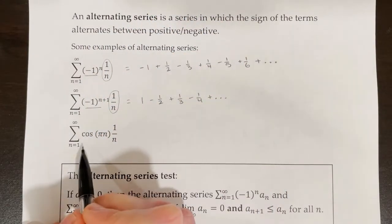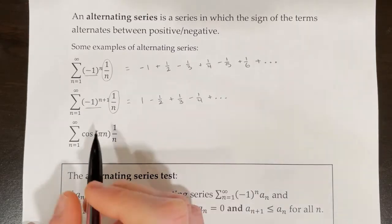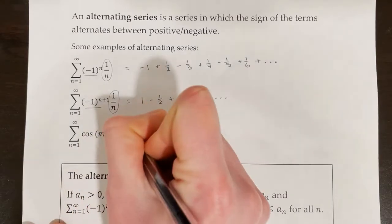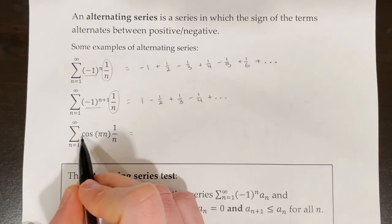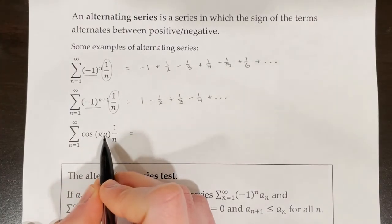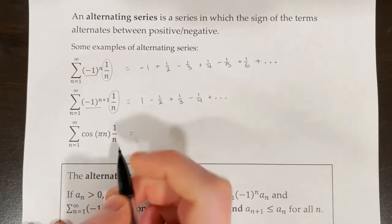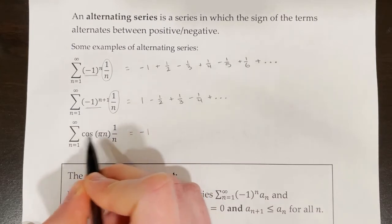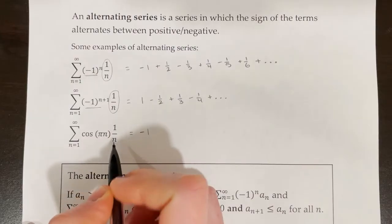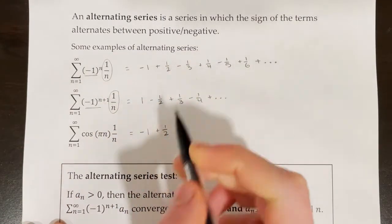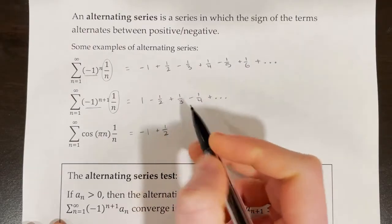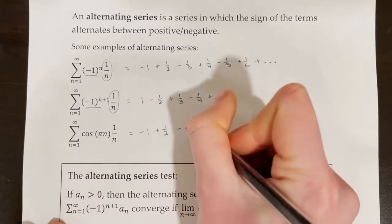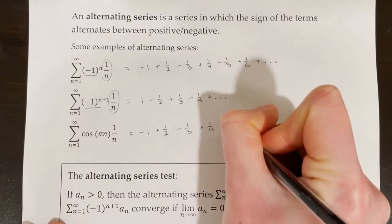Let's take a look at a third example. This one might not look like an alternating series, but let's examine its behavior. We have the series from n equals 1 to infinity of cosine of pi n times 1 over n. For the first term, cosine of pi is negative 1, so we have negative 1 times 1 over 1, making negative 1. For n equals 2, cosine of 2 pi is 1, so we have 1 times 1 half, making positive 1 half. The terms are identical to the first series — we've just swapped negative 1 to the power of n with cosine of pi n, and that makes sense because cosine is an oscillating function.